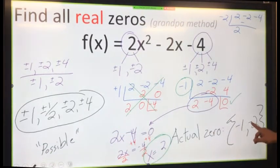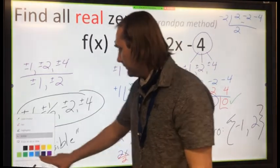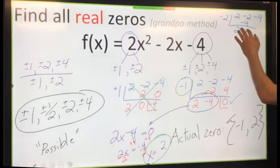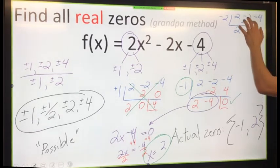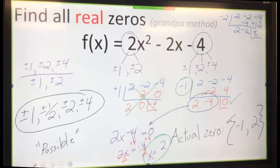I'll go ahead and finish it off. I'll get a -6 and then I get a +12 and then I get an 8. Wait a minute. -2 is not a zero. I got a remainder.